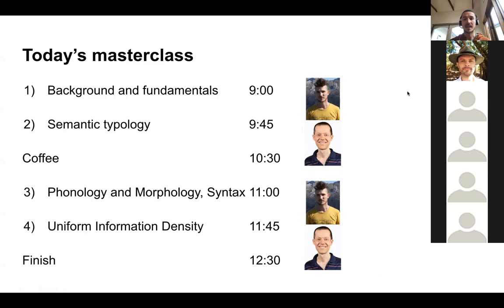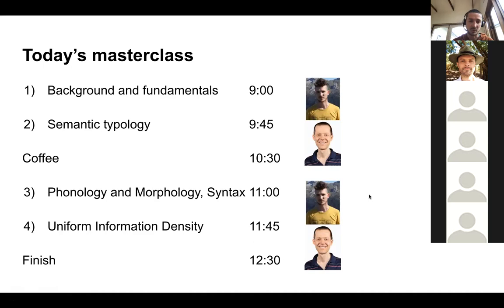Today's masterclass breaks into four parts, each about 45 minutes, alternating between the two presenters. First: background and fundamentals. Then semantic typology. Then a half-hour break. Then phonology, morphology, and syntax. And finally, Charles will talk about the mysterious and powerful principle of uniform information density. Participants are invited to jump in whenever — asking questions, making comments, using the hand-raise function or the chat.